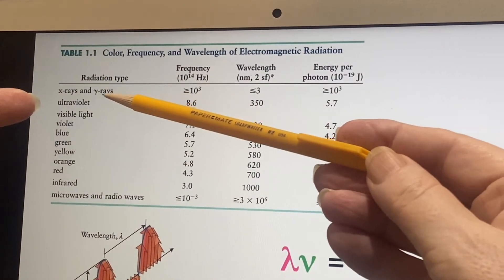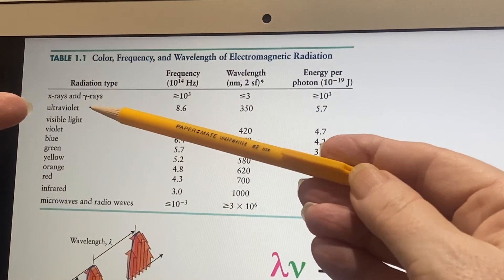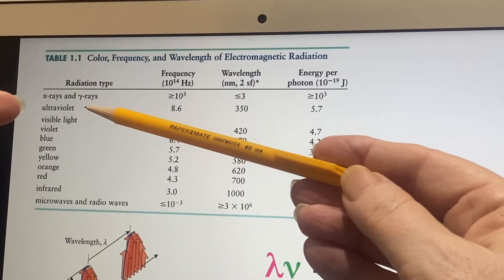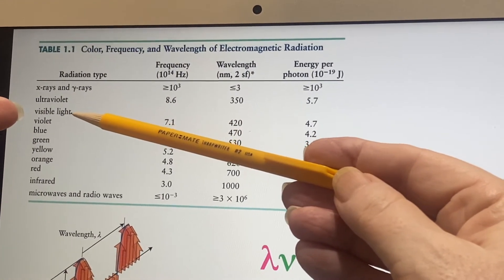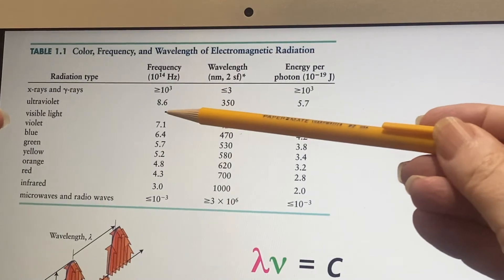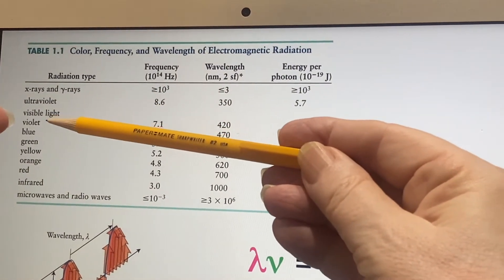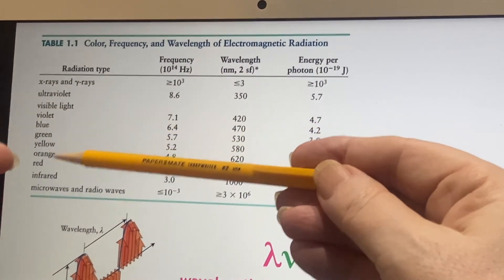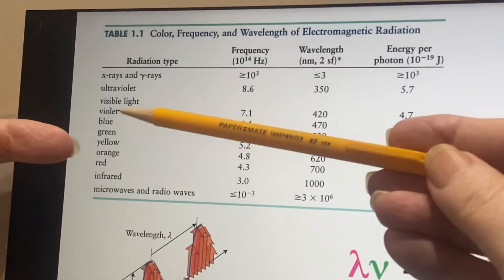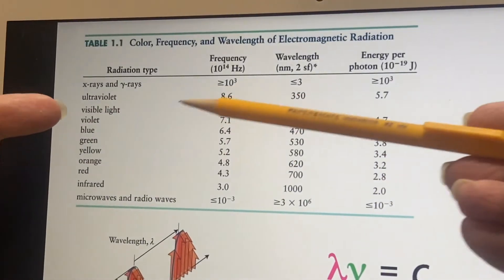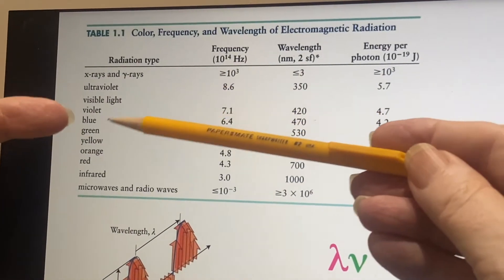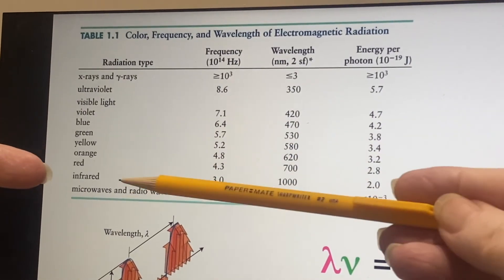So we have X-rays and gamma rays, ultraviolet, which you know full well will give you a sunburn. Then under the category of visible light, see how there's a gap here? We have the different colors that people normally associate with visible light, starting at violet, which is closest to ultraviolet, running through to red, which is closest to infrared.